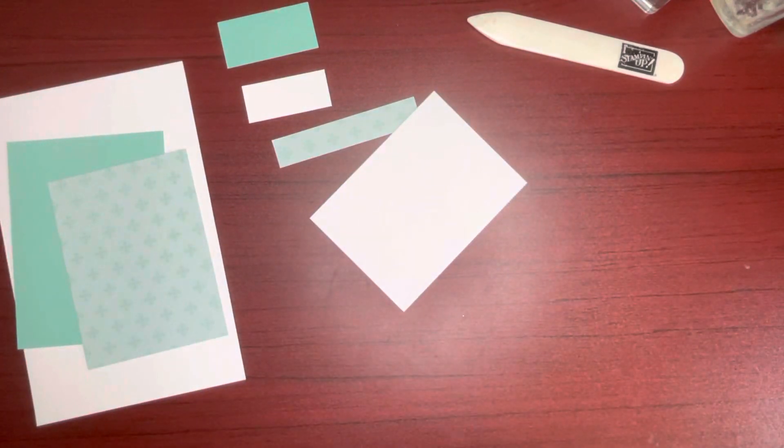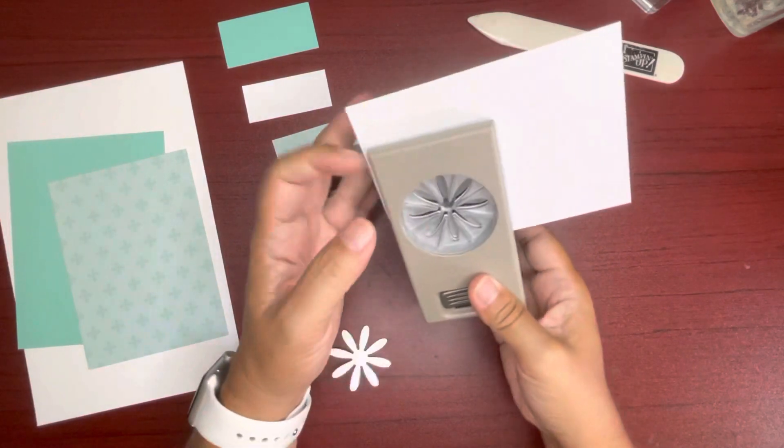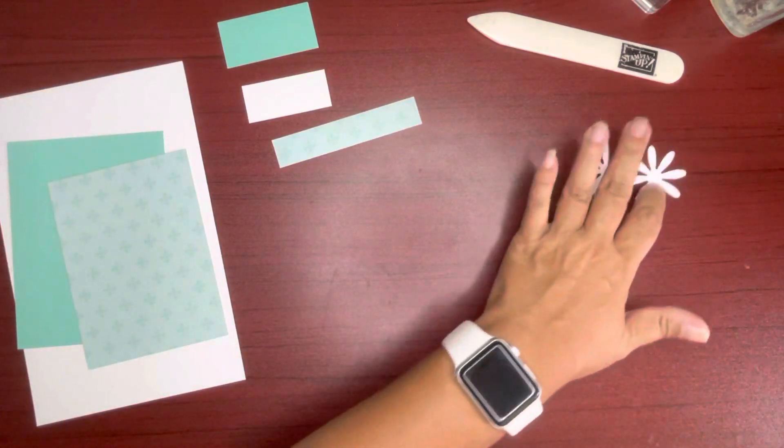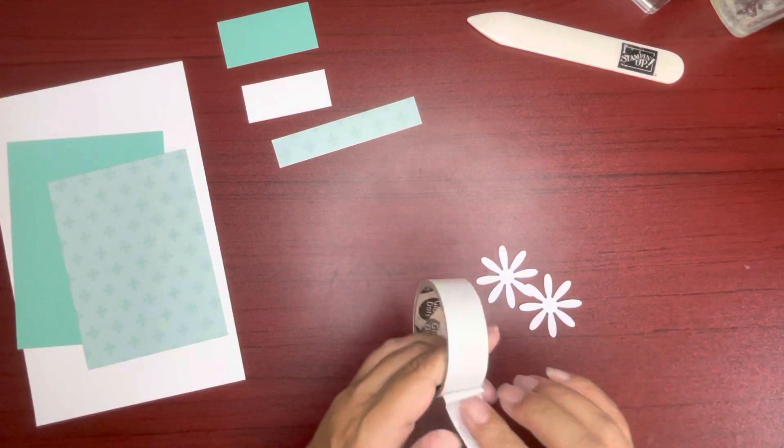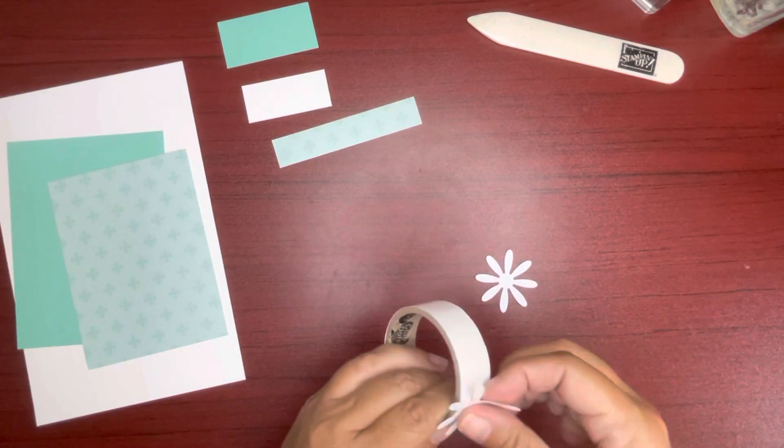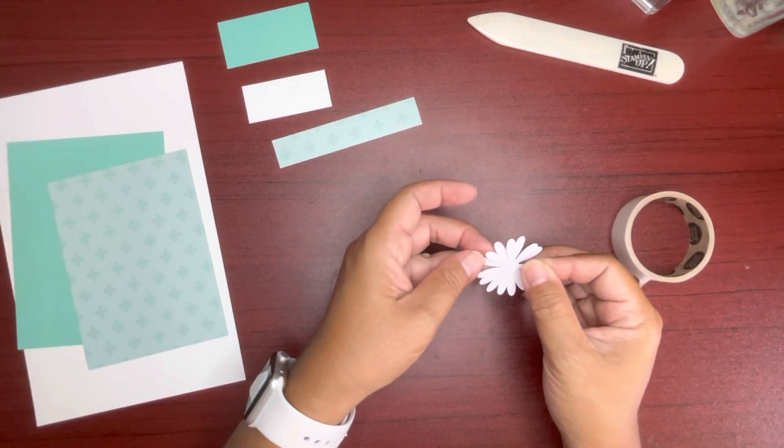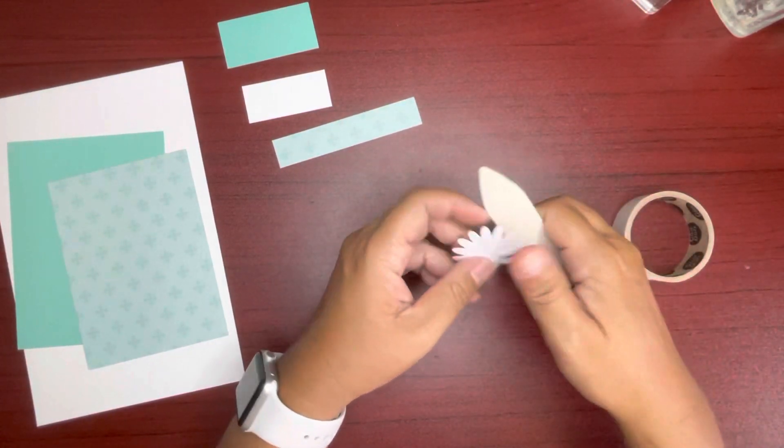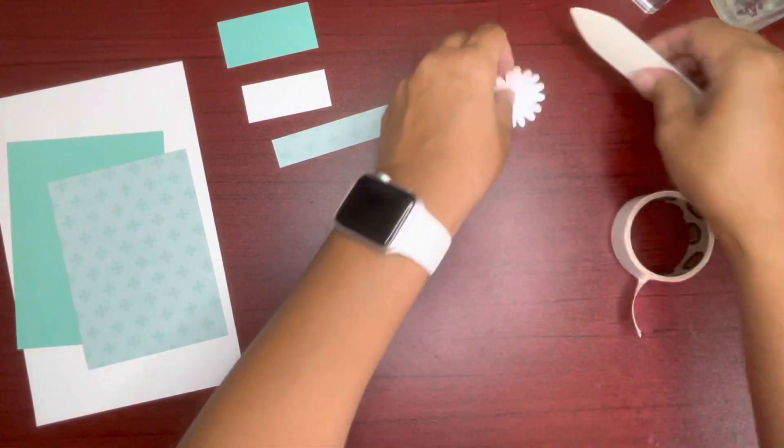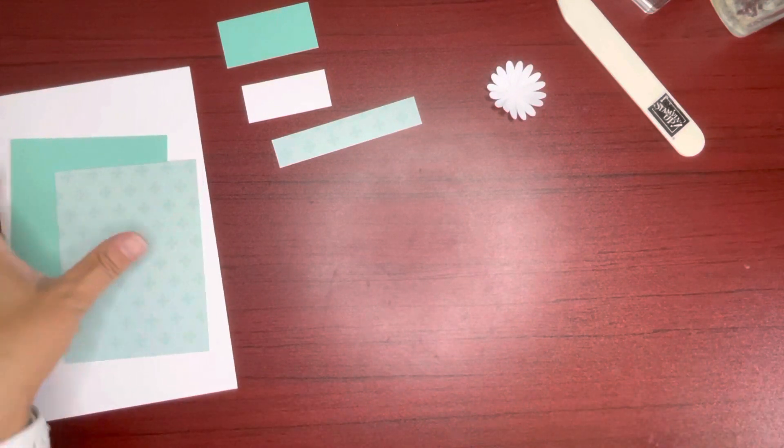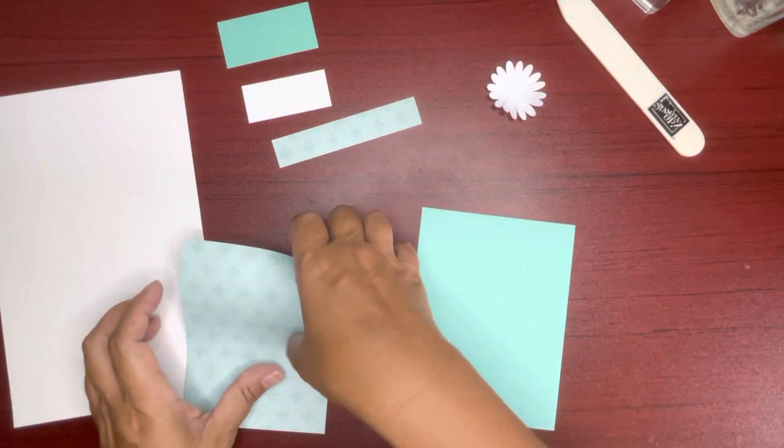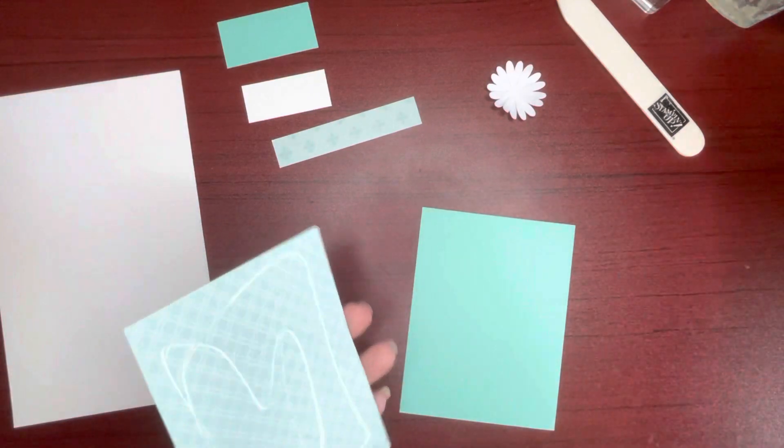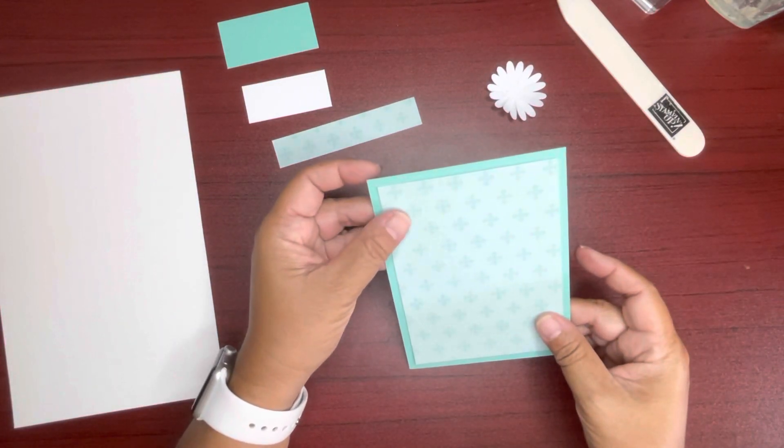And this here, we're just going to punch out a daisy or two daisies to make one daisy. Let's get out the glue dots and put this together, petal in petal. And then I like to fluff the petals up with the bone folder just a little bit. And this can layer onto this. Centering it.